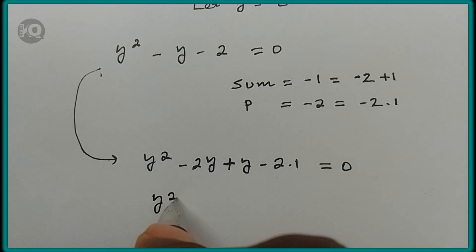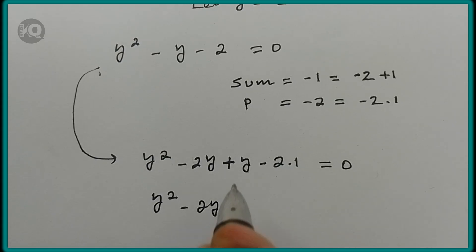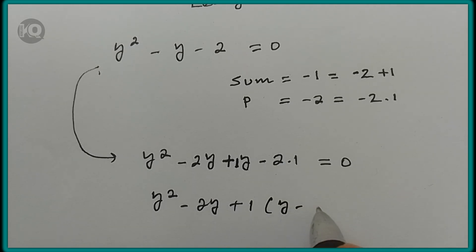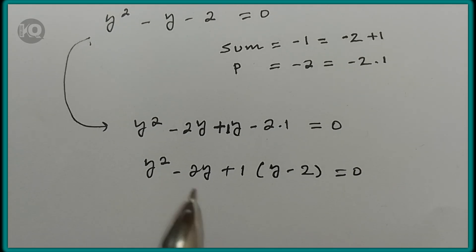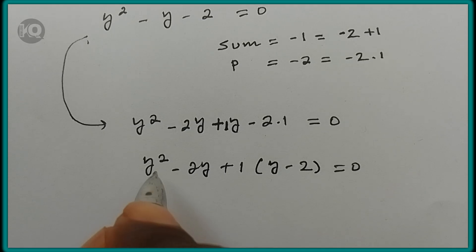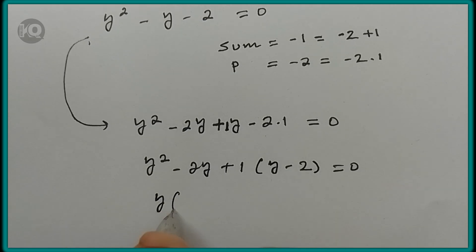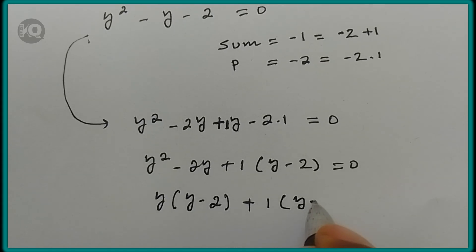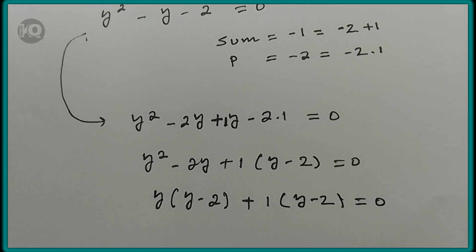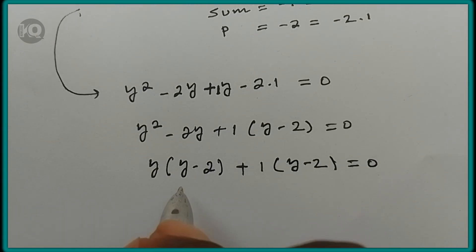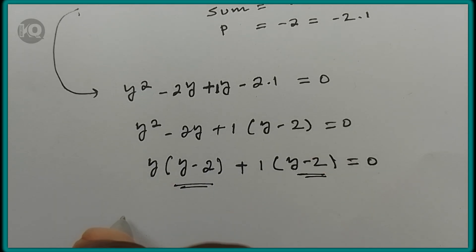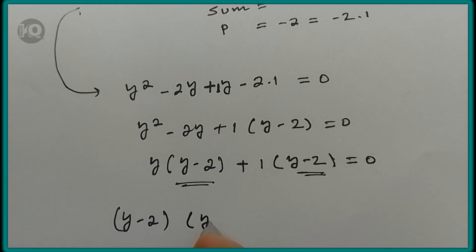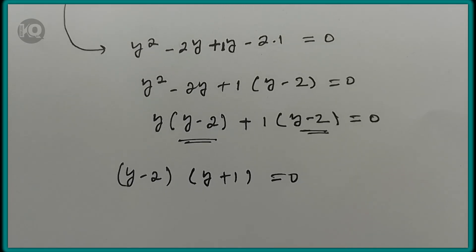From here, y squared minus 2y plus y minus 2 equals 0. We factor: y is common in the first two terms giving y times (y minus 2), plus 1 times (y minus 2), which equals 0. We have a common factor of (y minus 2), so factoring out gives (y minus 2)(y plus 1) equals 0.